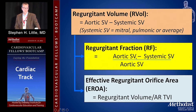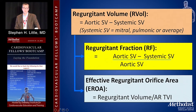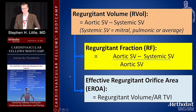You can also derive effective regurgitant orifice area, generally done for the mitral valve in practice. That's simply taking the regurgitant volume and dividing it by the VTI across that valve — volume divided by VTI equals area. You don't need to be able to do this immediately, but when you see it on echo lab reports, that's where it comes from.